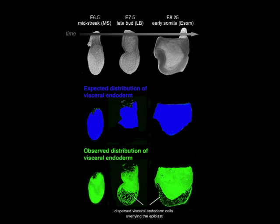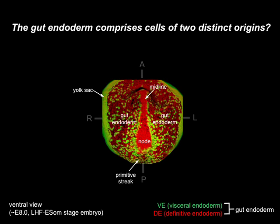Our data suggested a dynamic sequence of events taking place during endoderm formation. This led us to propose that visceral endoderm is dispersed by the intercalation of definitive endoderm cells, so visceral endoderm cells become scattered and not displaced to extraembryonic regions. You can get a better idea of the distribution of these two populations of cells in this view of a headfold stage embryo. This image also reveals another unexpected observation: these dispersed visceral endoderm cells become organised around midline structures, including the primitive streak and node — something we don't currently understand.